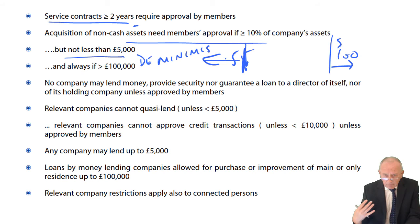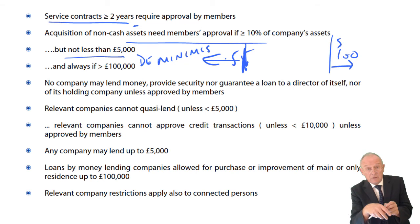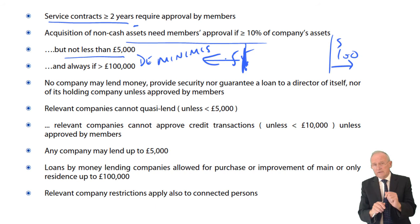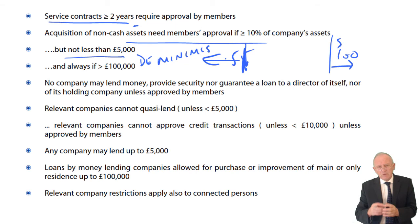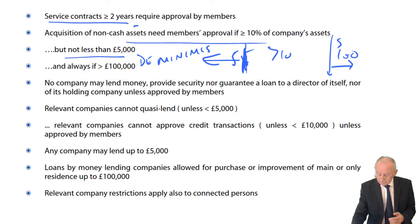Imagine the situation where the director's husband rings his wife — who is a director of Kellogg's — and says, we've run out of cornflakes, can you bring some home? And she says, yes, I'll just call a meeting of members to approve this acquisition of a non-cash asset — the meeting will take place in three weeks time. Stupid, isn't it? So if it's less than £5,000, nobody cares. If it's greater than £100,000, everyone cares. Otherwise, if it's in the range of £5,000 to £100,000, is it greater than 10% of the company's assets?